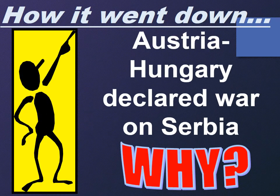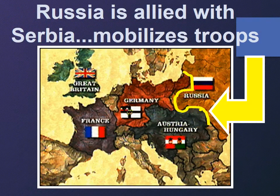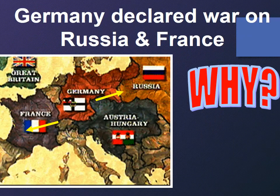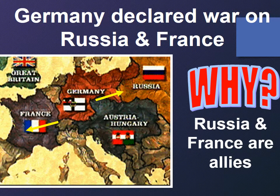So let's talk about how it went down. Austria-Hungary declared war on Serbia. Russia is allied with Serbia, so Russia begins to mobilize their troops and get prepared to support Serbia. Germany then declared war on Russia and France, because Russia and France are allies.